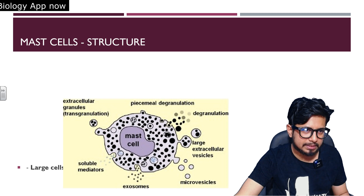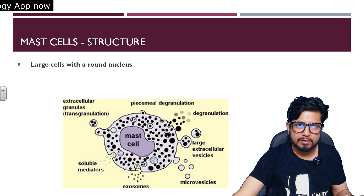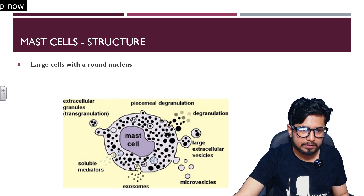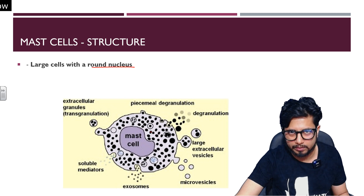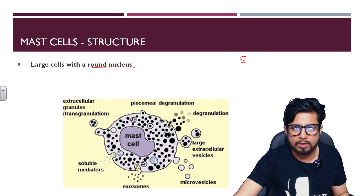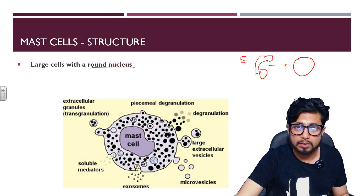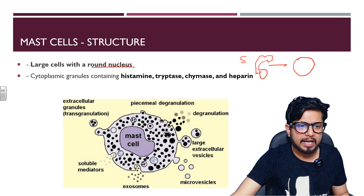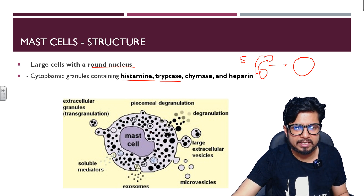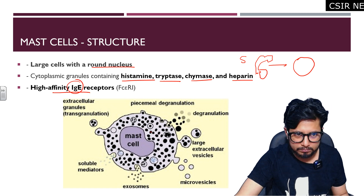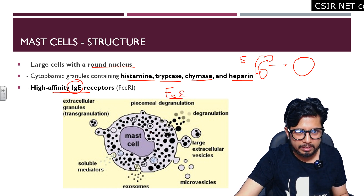Looking at mast cell structure: mast cells are larger than basophils and are filled with more granules. They have a large, globular, round nucleus — unlike basophils, which have a bilobed or S-shaped nucleus. Their cytoplasmic granules are filled with histamine, tryptase, chymase, and heparin.